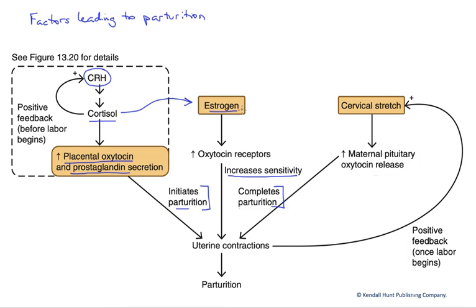Estrogen increases the number of gap junctions and the number of oxytocin receptors, so we're going to get stronger and stronger contractions as estrogen levels rise. Because of those uterine contractions, we're going to get cervical stretch. The cervix is the bottom portion of the uterus against which the fetus is being pushed to eventually exit the uterus.